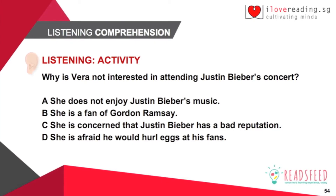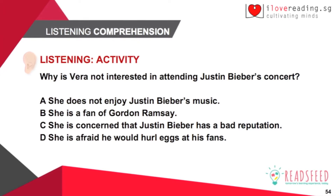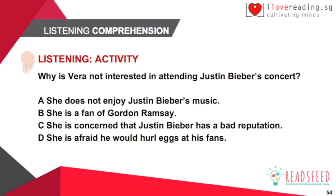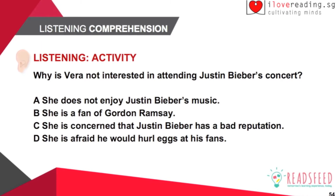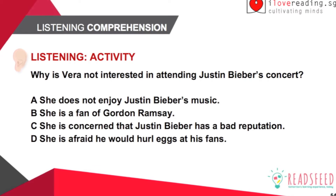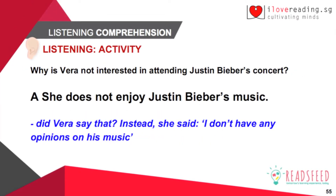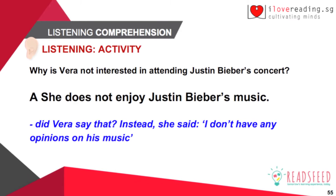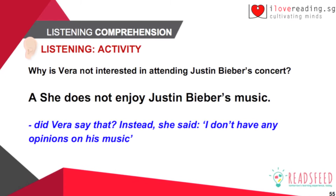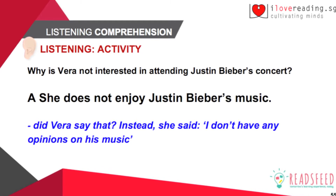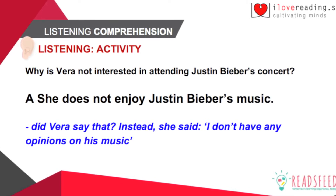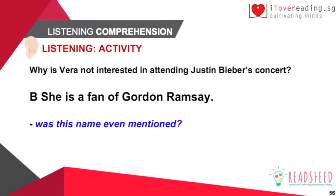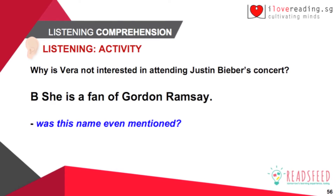You've heard the listening. So I'm going to pose a question. This is a simple MCQ question: why is Vera not interested in attending Justin Bieber's concert? There are four options. If I were to analyse every single option — she does not enjoy Justin Bieber's music. Did Vera say that? Did she say she didn't like his music? What did she exactly say? She said, 'I don't have any opinions on his music,' which means she's actually neutral — no strong feelings of dislike or like. She's a fan of Gordon Ramsay — Gordon Ramsay wasn't even mentioned, so if a student puts this, they're on La La Land.